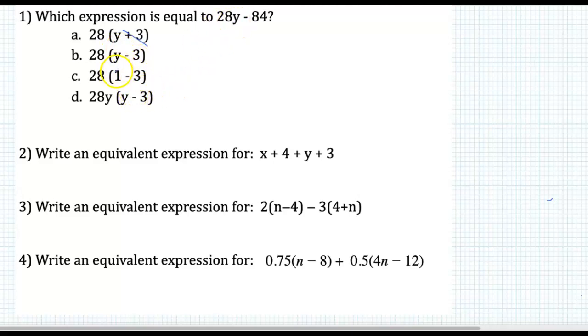28y, if it doesn't start with y, not going to be that one there. This would be y squared, so it's not going to be that one. We're left with this one here. We can just check that. 28y, if we multiply 28 by y, and then 28 by negative 3 gives us negative 84.